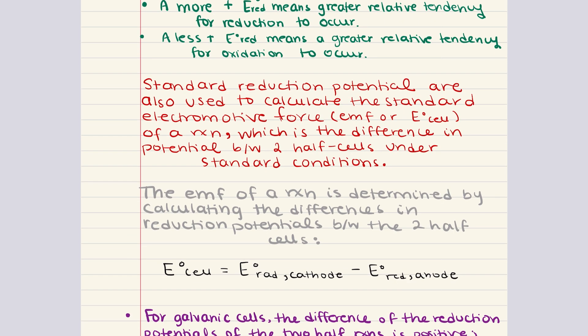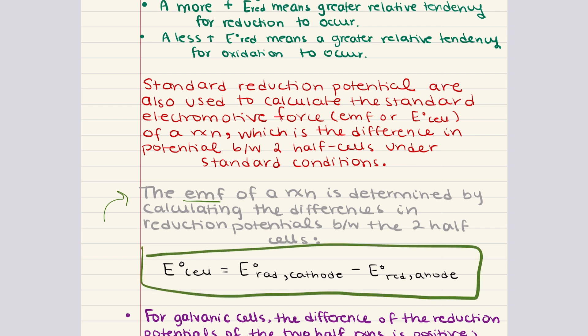Now we want to talk about electromotive force, also known as EMF. The standard electromotive force is the difference in potential in voltage between two half cells under standard conditions, and it is calculated using the standard reduction potentials of the two half cells. When calculating the EMF, you subtract the reduction potential of the anode from the reduction potential of the cathode. It's crucial not to multiply the standard potentials by the number of moles oxidized or reduced, because the potential of each electrode is independent of the amount of material — it depends solely on the identity of the material.